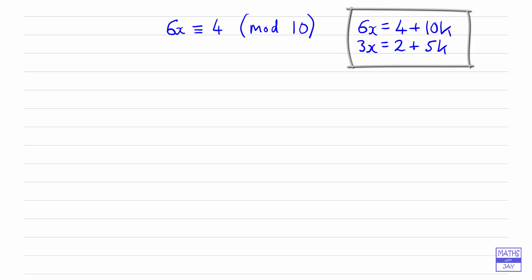And you could just write that as another linear congruence, but this time in mod 5. So it's going to be simpler to solve. So what we've got is that 3x is congruent to 2 mod 5.